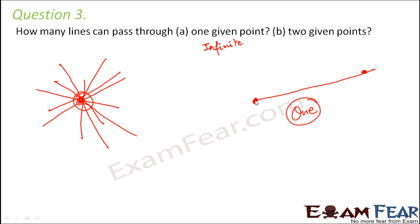So if you say, if you try to draw a line like this, it doesn't pass through this point. If you try to draw a line like this, again, it doesn't pass through this point. So for a line to pass through both of these points, there could be just one such line.